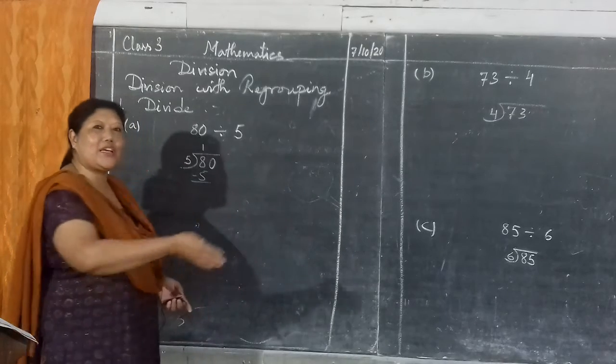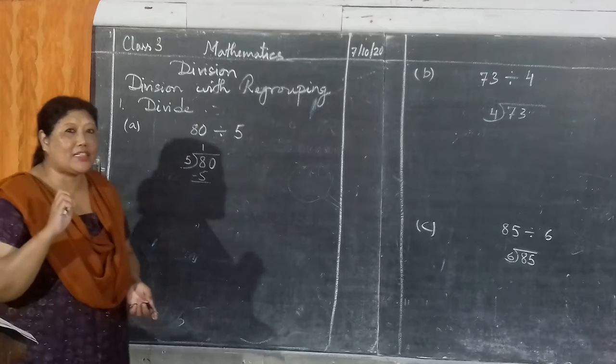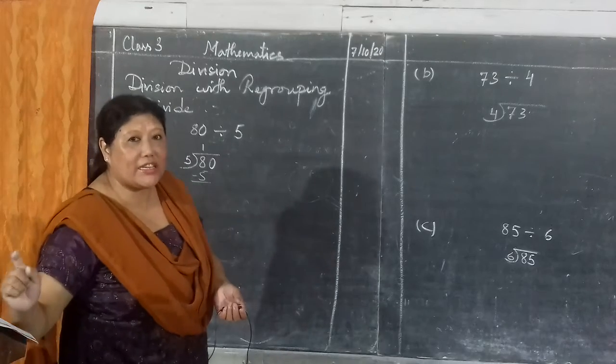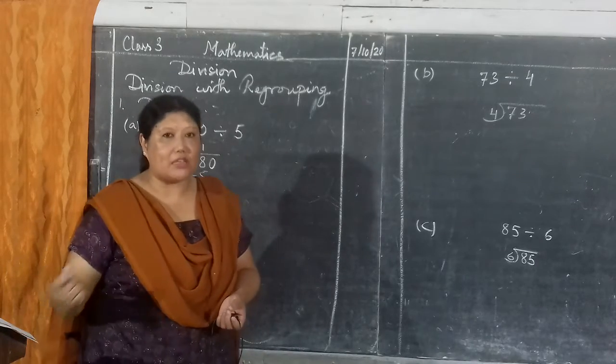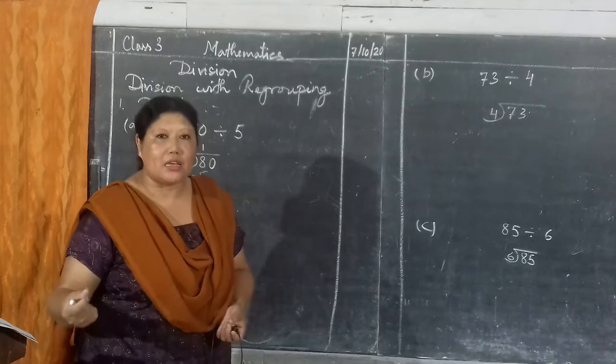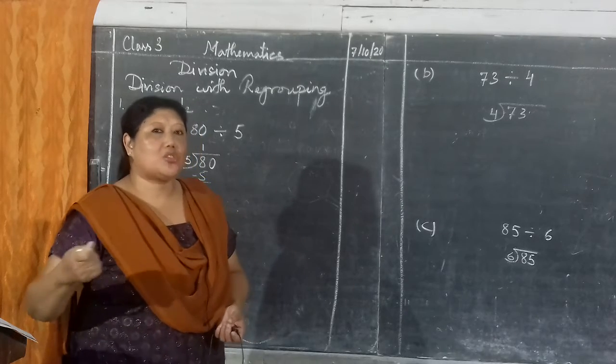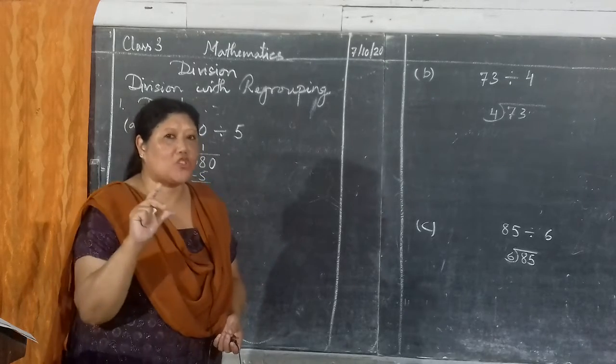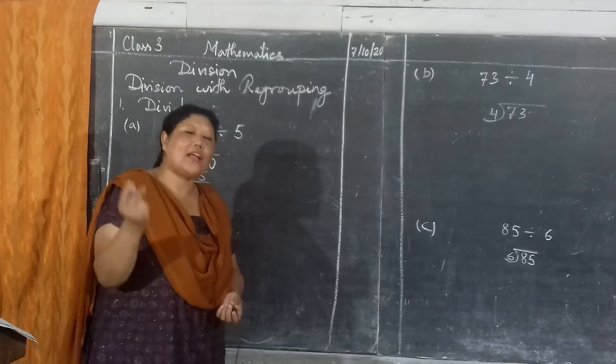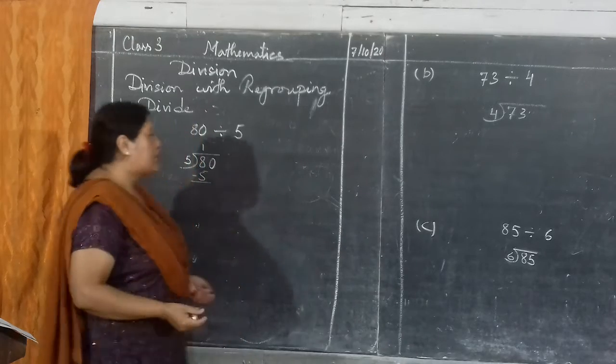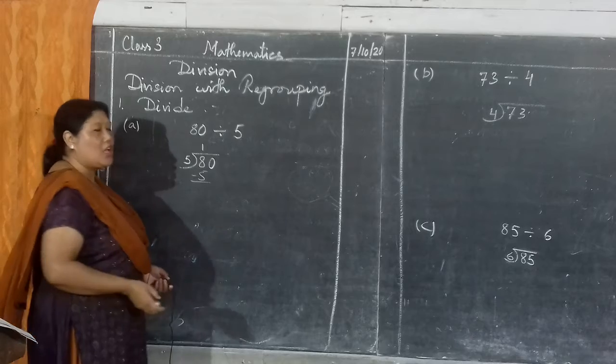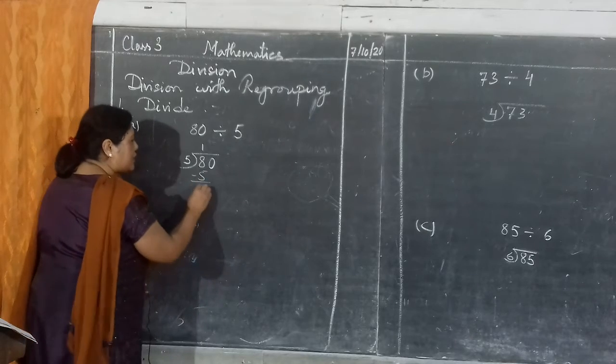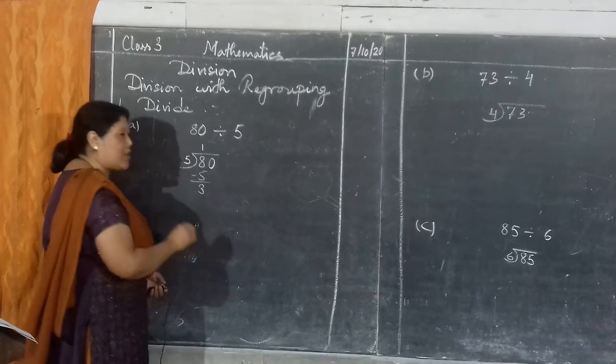And division is related with subtraction because you distribute, isn't it? You distribute sweets, distribute money, so answers will be smaller. In subtraction also answer will be smaller, isn't it? That's why we subtract. So 8 minus 5 is 3.